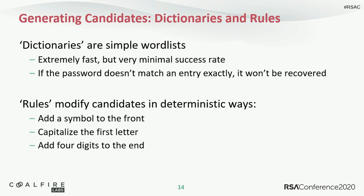Next we have dictionaries and rules. Dictionaries are just word lists — Hashcat puts every entry through the hashing algorithm as-is, and if it's an exact match, you crack the hash. But if somebody capitalized a letter or swapped an O for a zero, it won't find it. That's where rule files come in. Rule files modify password candidates in deterministic ways — for example, starting with a dictionary word, adding a symbol to the front, capitalizing the first letter, and adding four digits to the end. This is even faster than a mask attack and will likely crack the same passwords.